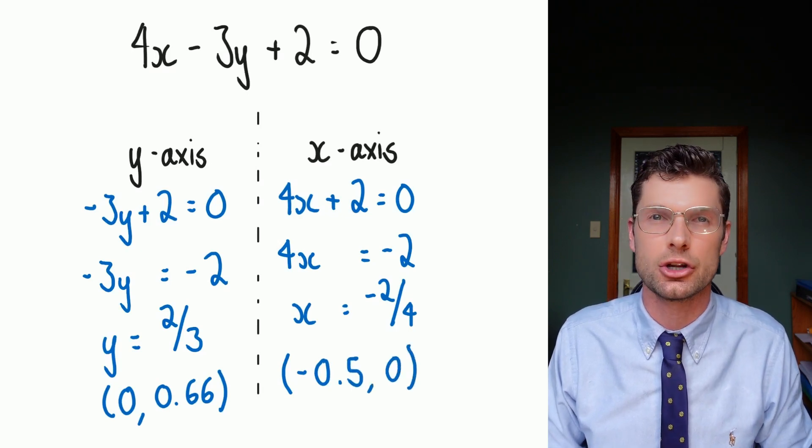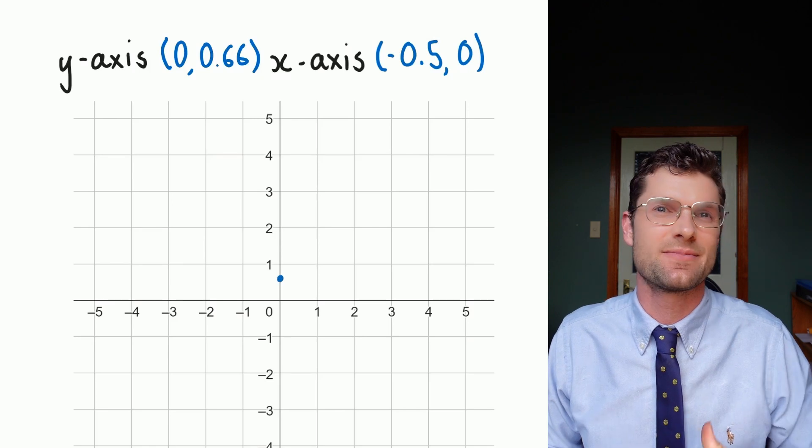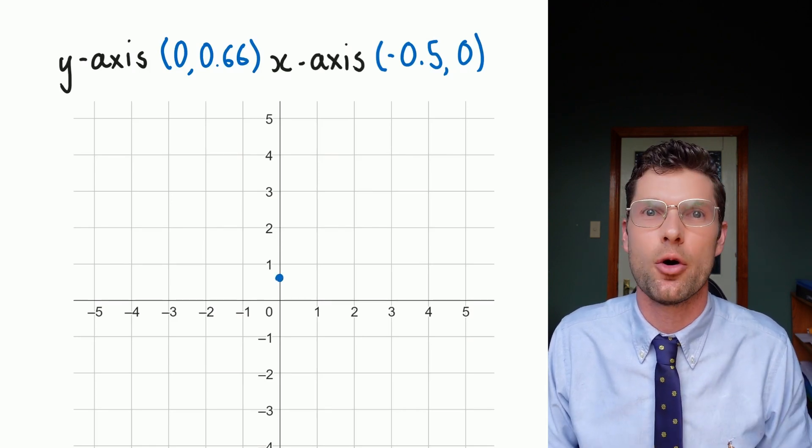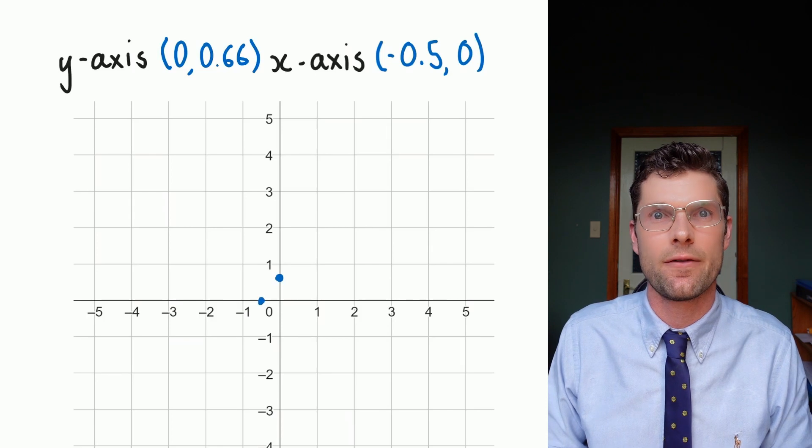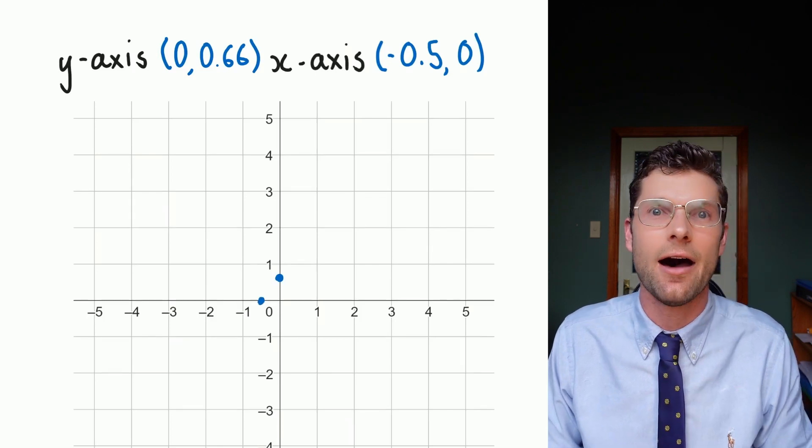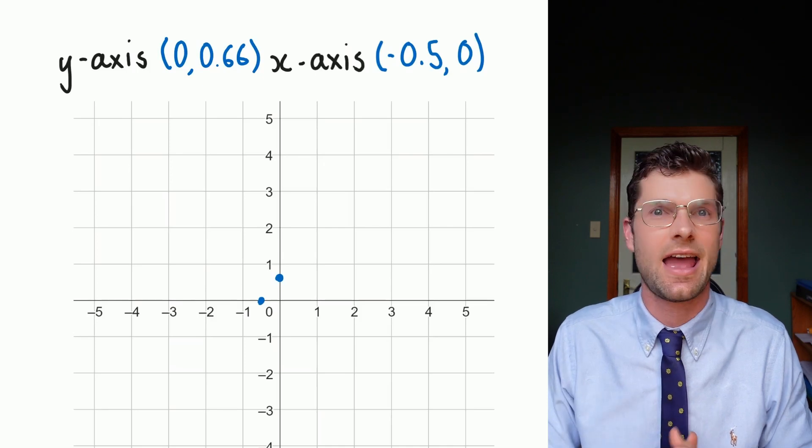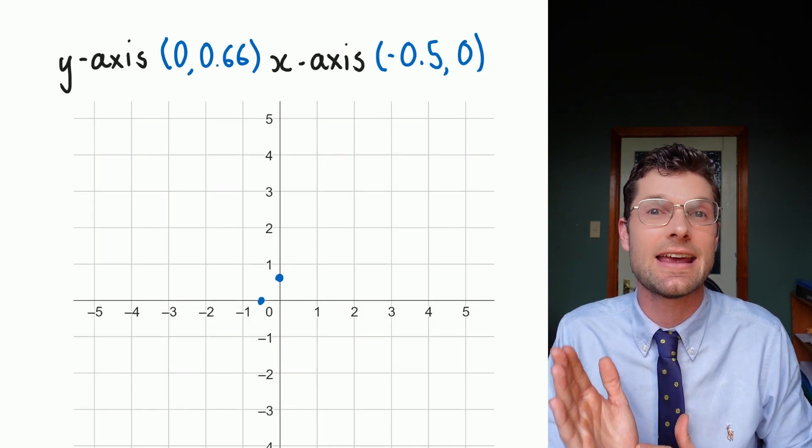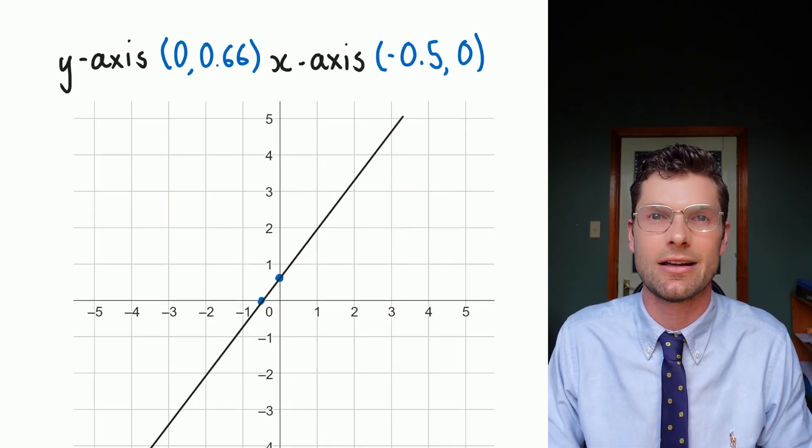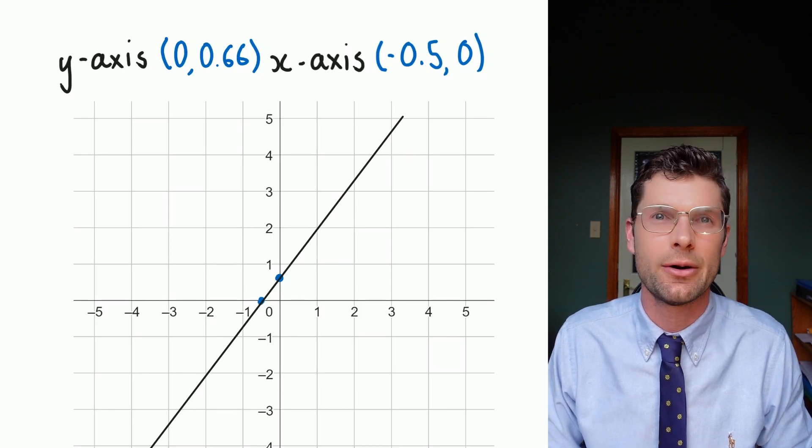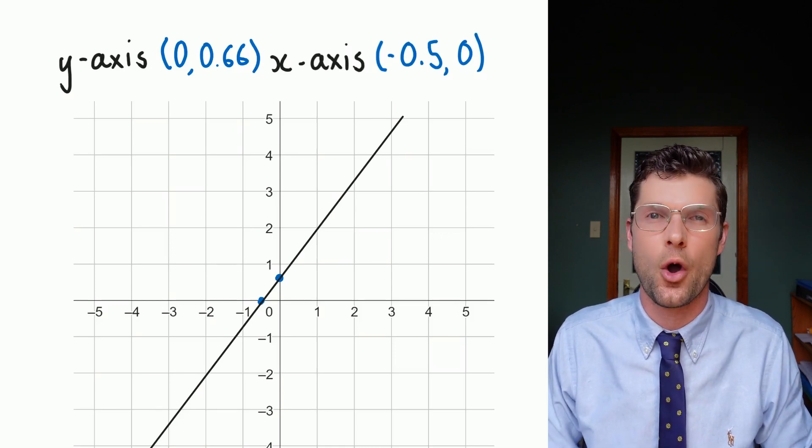That's all the work I've got to do. Now I'm just going to plot these two points. 0.66 is up a little bit, just a little bit more than half, and the negative 0.5 is exactly half a square over to the left. I've got those two points in. Even though they're really close together, I can see how they would line up in a straight line. Once I've got my ruler through it, I'm done.